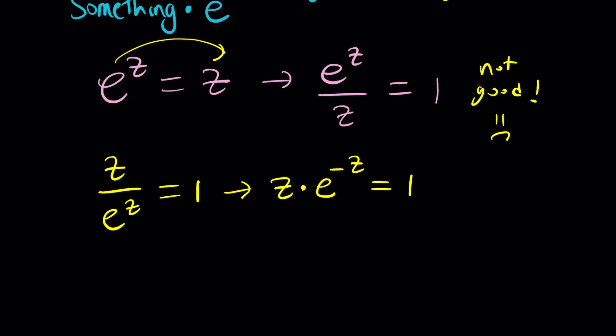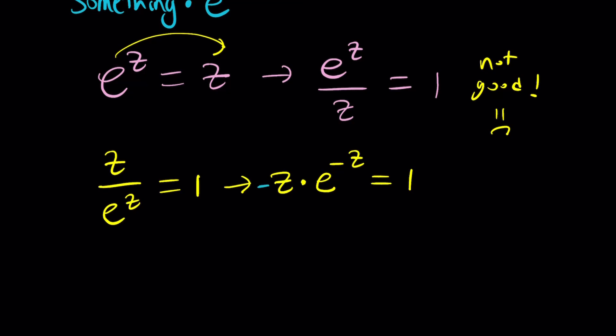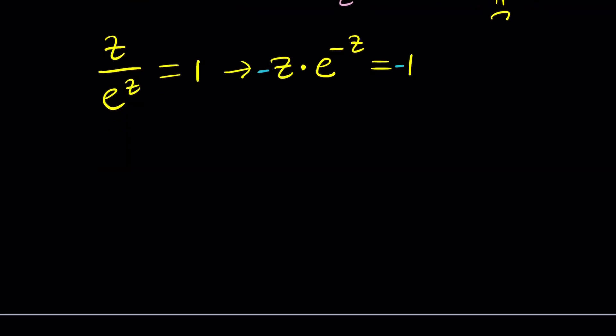We basically have e to the something with a negative power, but that can be fixed very easily. Take a look. We put a minus sign here, and then we put a minus sign here. In other words, we multiplied both sides by negative one. And that just did the trick. So now we have negative z times e^(-z) equals negative one.